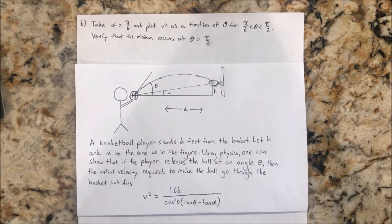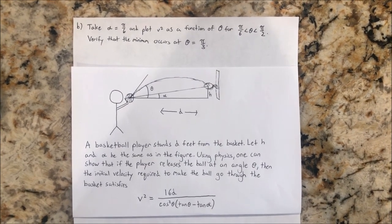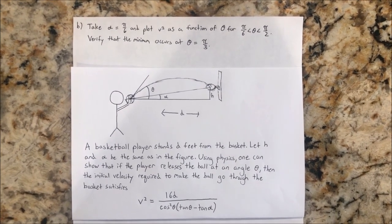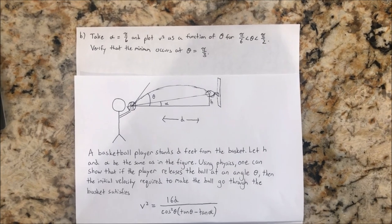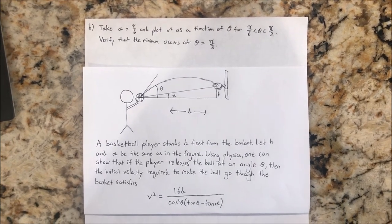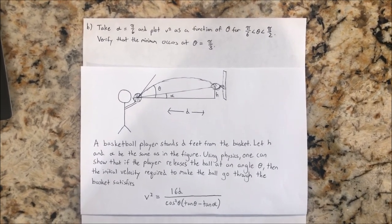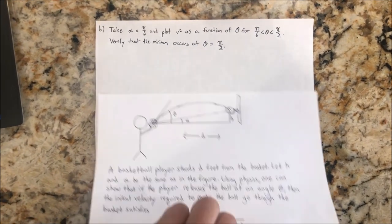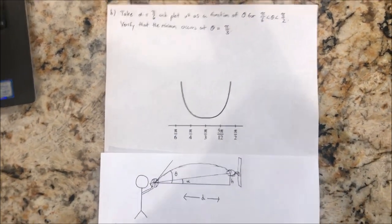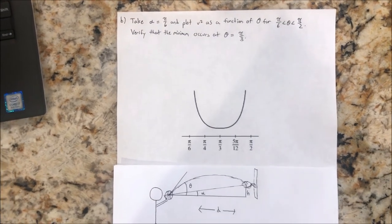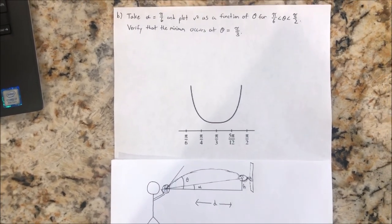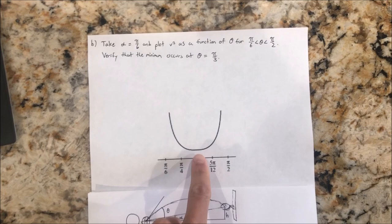Alright, for subpart B, we take alpha is equal to pi over 6 and plot v squared as a function of theta, for theta is between pi over 6 to pi over 2. Verify that the minimum occurs at theta is equal to pi over 3. So if we plot this, then we get a graph that should look like this. And clearly, the minimum occurs where theta is equal to pi over 3, right here.